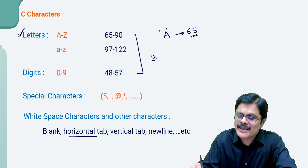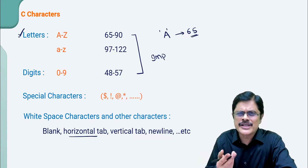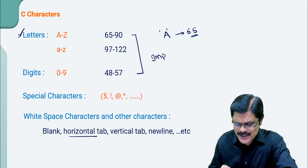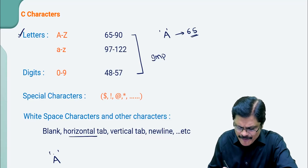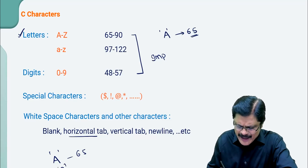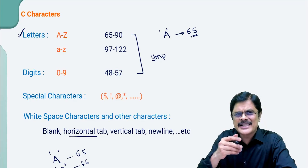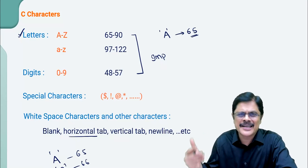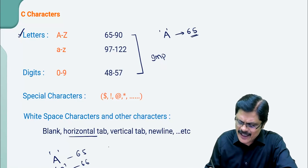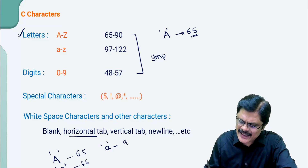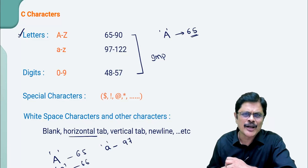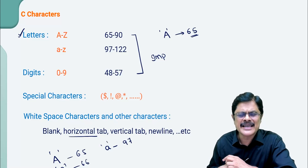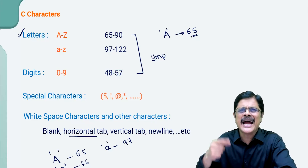We should remember these ASCII values. It is very simple — if you know the ASCII value of A, which is 65, then B will be 66. In sequential manner, you can find the ASCII value of the next letter. Similarly, for small a the ASCII value is 97, then you can know ASCII values of b, c, d, etc. — just add one.